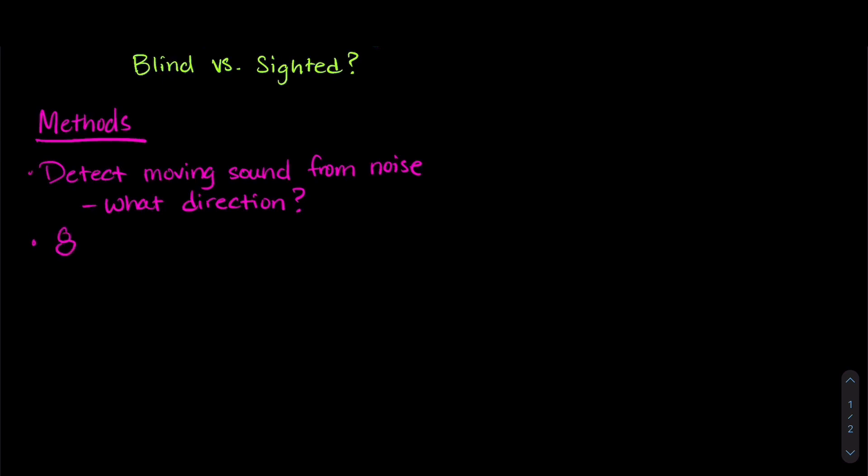So they used eight early blind participants. These are participants who lost their sight during childhood instead of adulthood versus eight sighted participants. And then the researchers used a mathematical model to see how the early blind participants and the sighted participants processed this detection of moving sound.